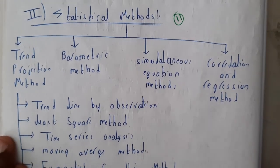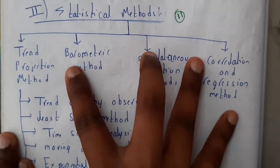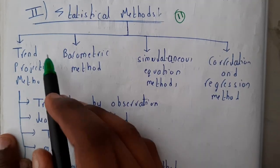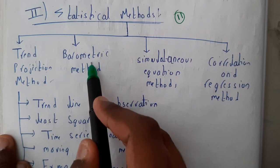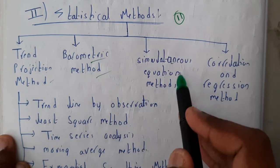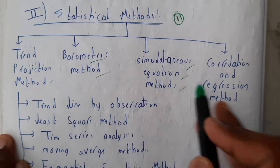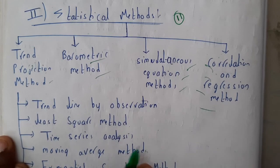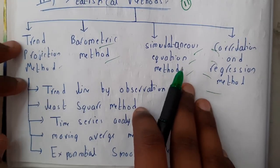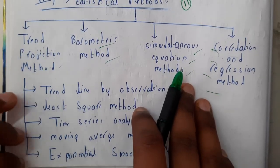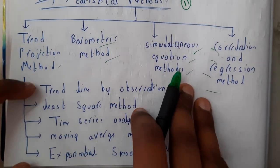The statistical method is majorly divided into four: trend projection method, barometric method, simultaneous equation method, and correlation and regression method. The trend projection method is further divided into five types.